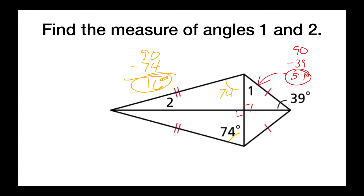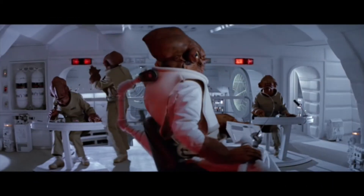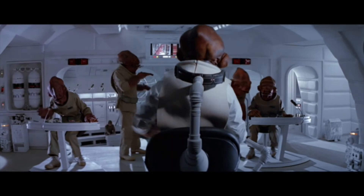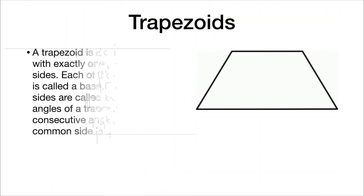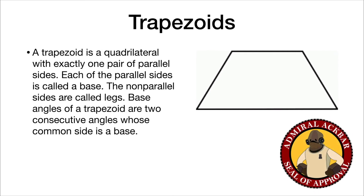Now we're on to our next shape — trapezoids. A trapezoid is a quadrilateral with exactly one pair of parallel sides. Each of the parallel sides is called a base, so the top and bottom are bases. The non-parallel sides are called legs, kind of like an isosceles triangle.